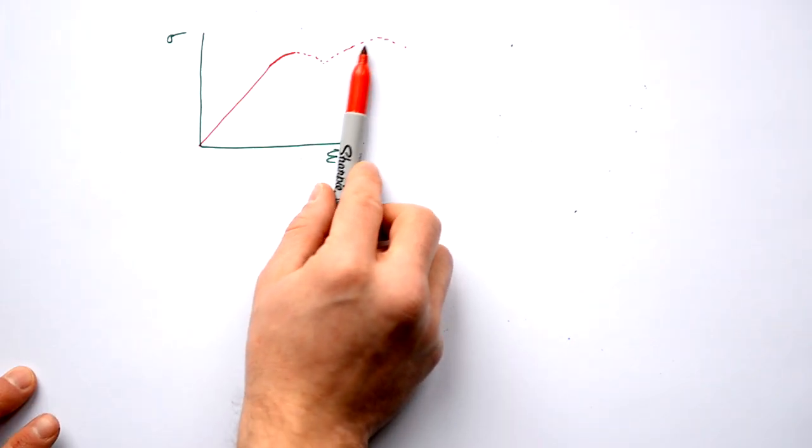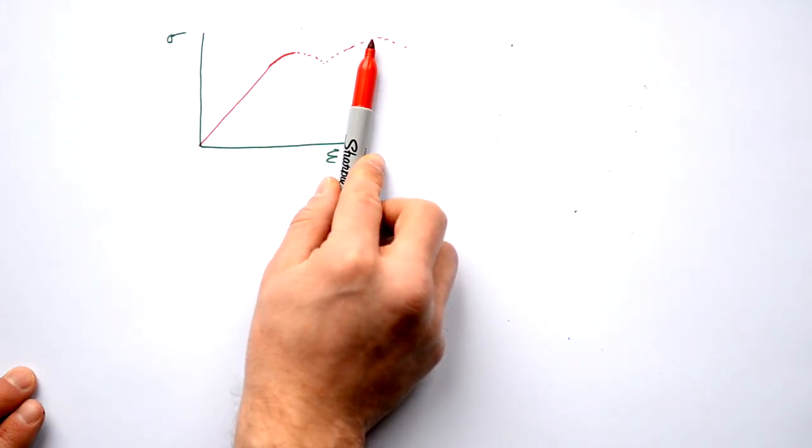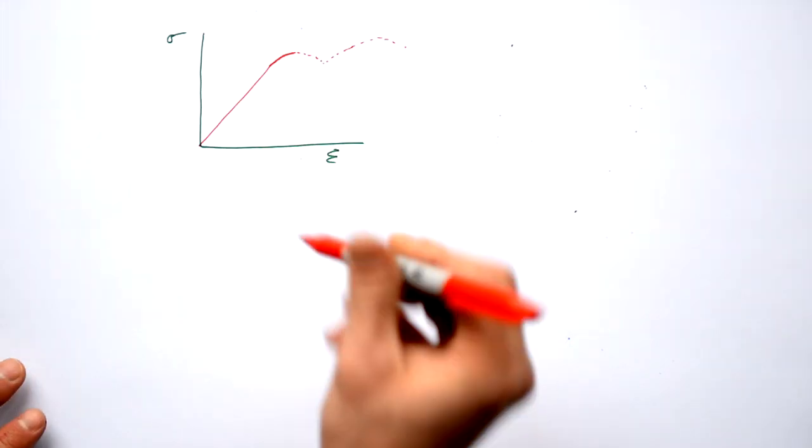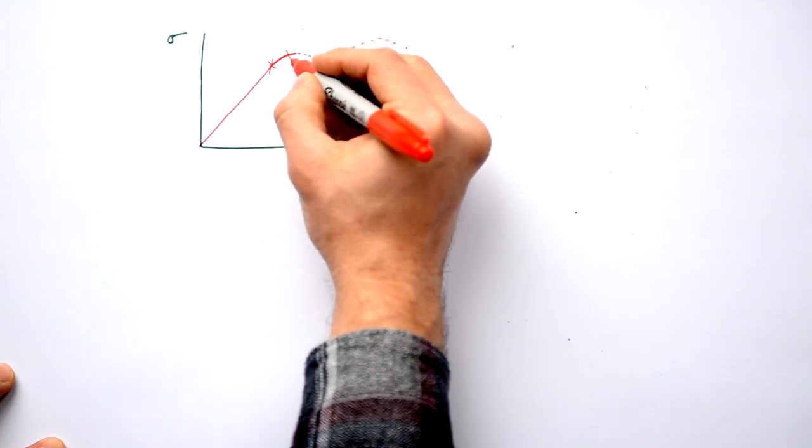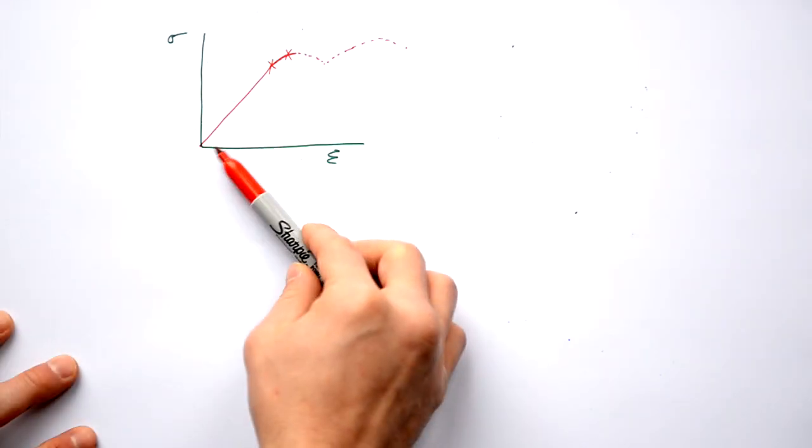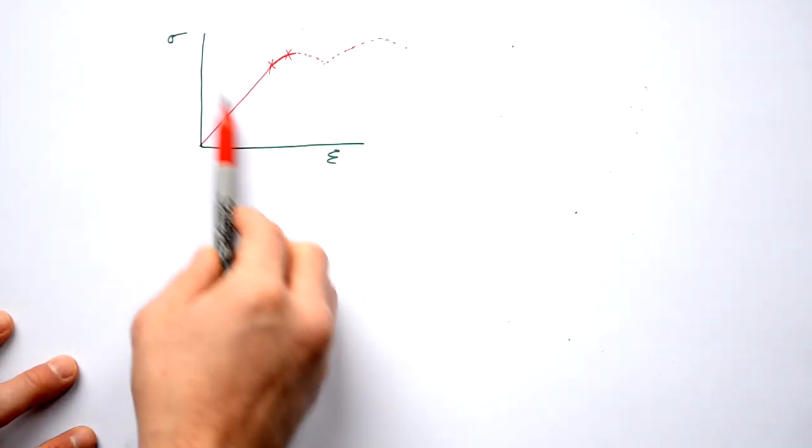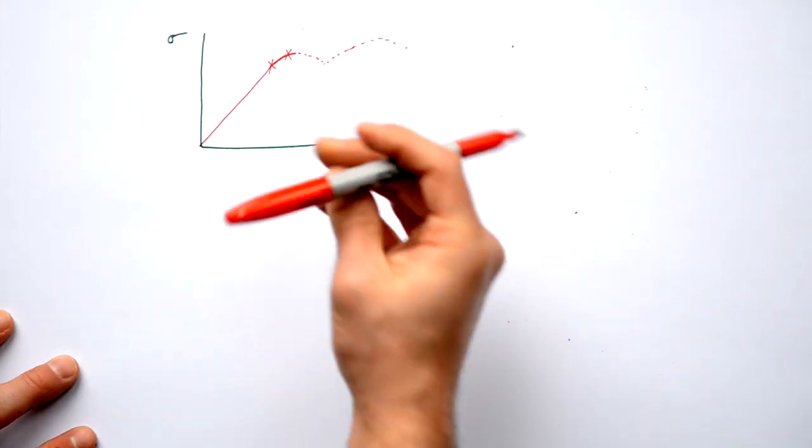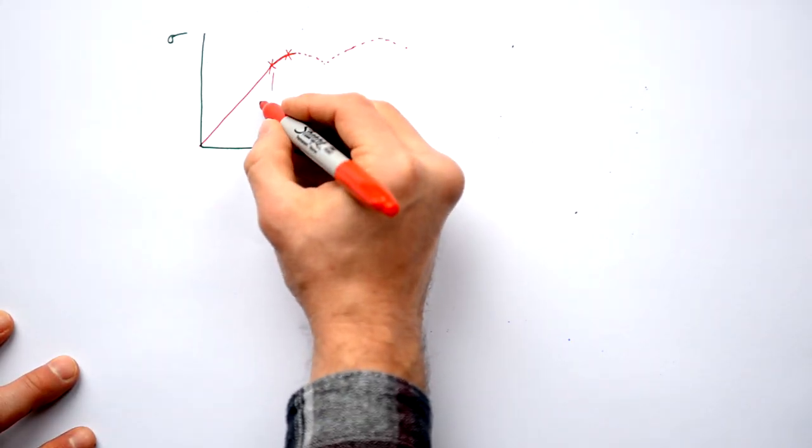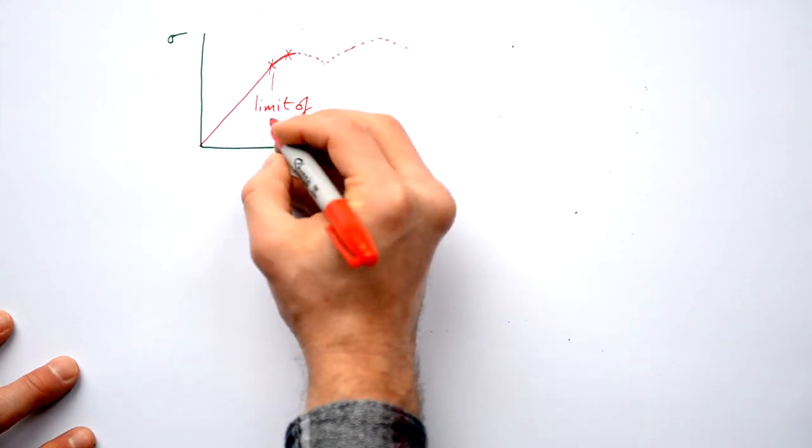This is called a yield point. This point up here is called the ultimate tensile strength. Then here is the breaking point. But we're only concerned about these points here. We care about this straight line and this point up here. Now we can see that while we've got a straight line, stress and strain are proportional. When it starts leveling off like that, it's no longer proportional. So that's why we call this the limit of proportionality.